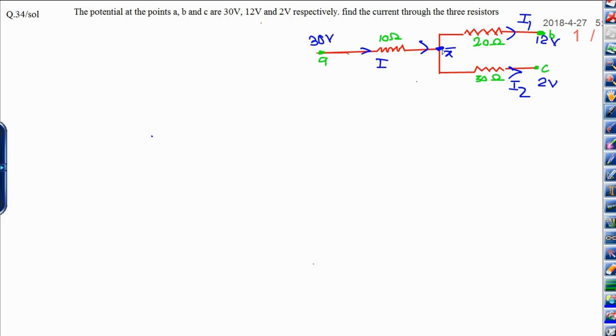Now, when you see at the junction, I can be written as I1 plus I2.